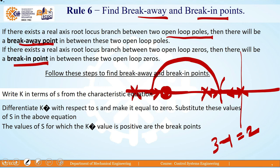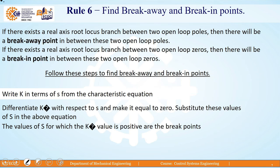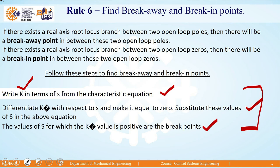The general steps to find breakaway and break-in points are: first, write the characteristic equation with K isolated on one side and all S terms on the other. Second, differentiate K with respect to S and set it equal to zero. Third, substitute the values of S back into the equation; the values of S for which K is positive are the breakaway or break-in points.